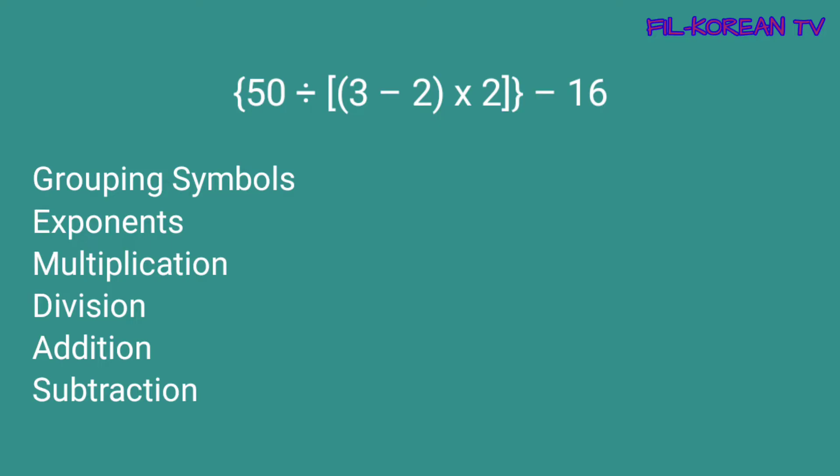Sa GEMDAS rule, uunahin natin isolve ang nasa loob ng grouping symbols. Dito sa example natin, mayroong tatlong grouping symbols. Ang uunahin natin sa pag-solve ay ang nasa pinakaloob, ang nasa parenteses. Then, yung nasa brackets. At pagkatapos ay ang nasa braces. Pagkatapos ma-solve ang nasa loob ng grouping symbols, ang susunod na gagawin ay kukunin ang value ng number na may exponent.